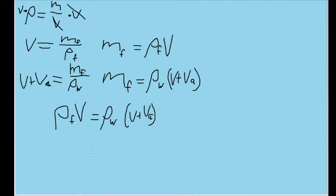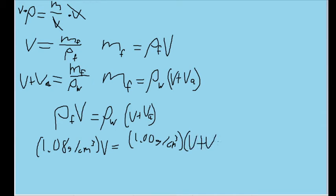And that is exactly what I've done here. Now, substituting in our values for density, this becomes 1.08 grams per cubic centimeter times v equals 1.00 grams per cubic centimeter times v plus v sub a. Now, because we have the grams per cubic centimeters units on both sides, we can cancel these units out and make the numbers in our equation effectively dimensionless.